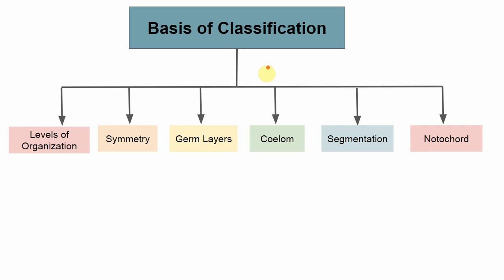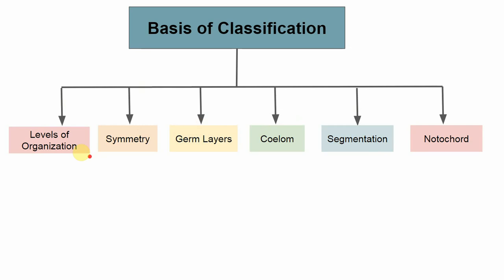Classification is mainly done on certain bases. The complete basis of classification begins with the levels of organization, symmetry, germ layers, coelom, segmentation, and the notochord.